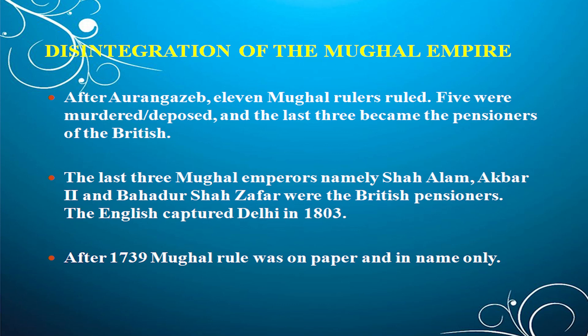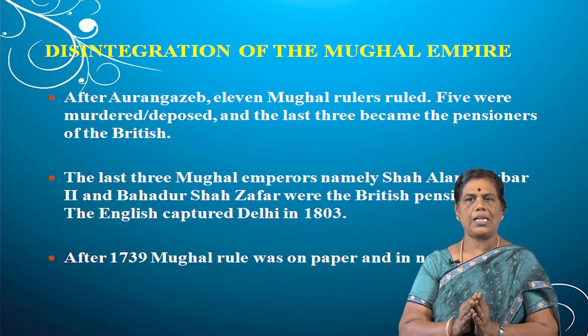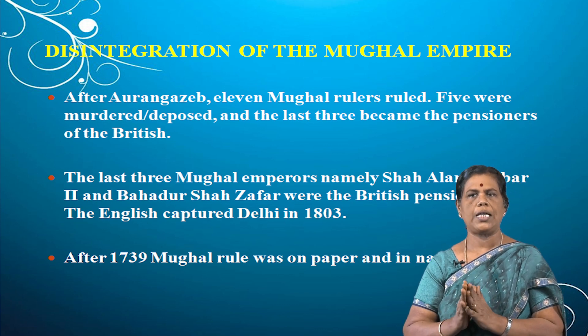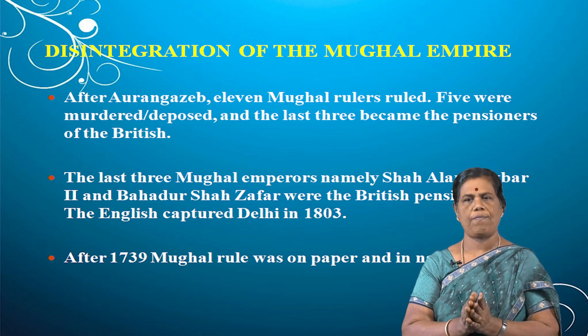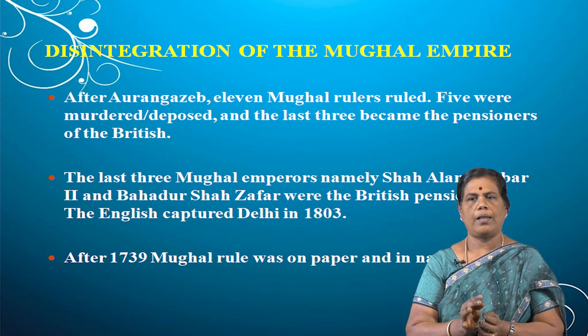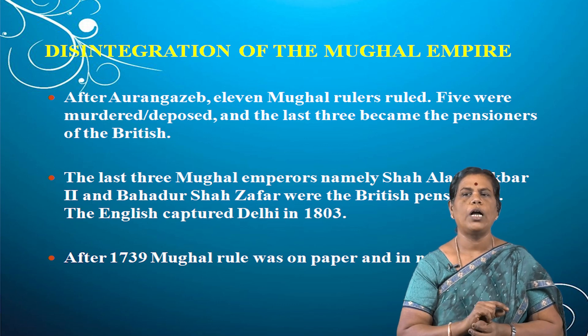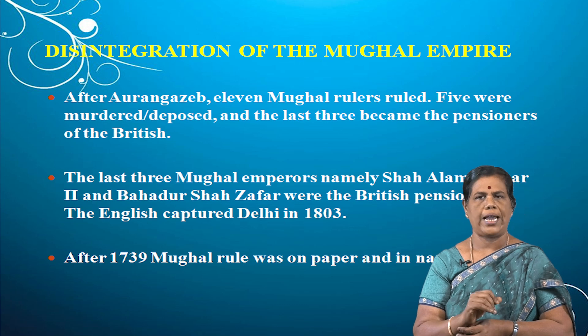After 1739 the Mughal rule was on paper and in name only. In the year 1707 Aurangzeb died. After his period, many Mughal rulers ruled India, but they were weak and inefficient. That was remarked as the Mughal rule being on paper and in name only.